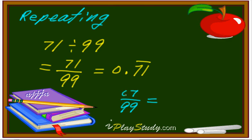That means this one must be two digits. 07. That means 0.07, 07, 07, 07 forever.